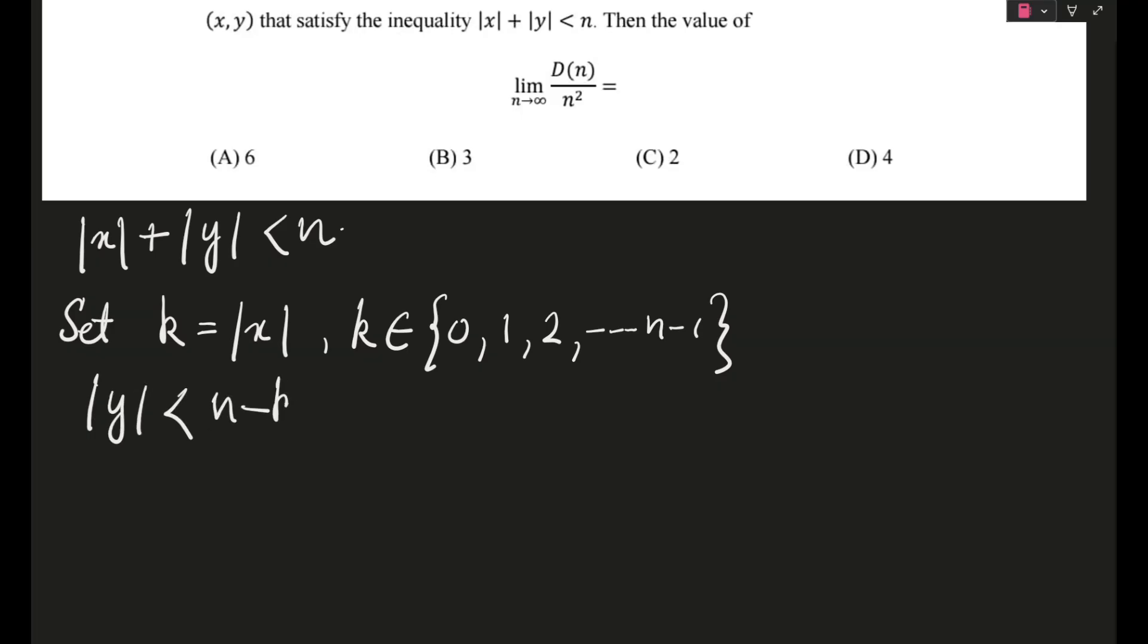Actually your inequality would become |y| < n - k, or rather I can say that your y will actually belong to the following values: -(n-k-1), ..., -1, 0, 1, ..., n-k-1. Why this happens is because it's less than, so we obviously can't include n-k. And it's a |y| graph so it extends to both sides.